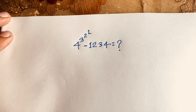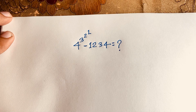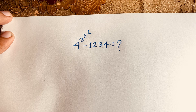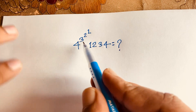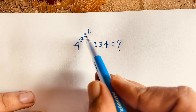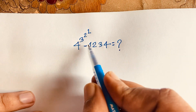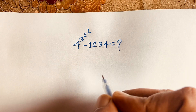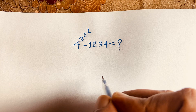Hello everyone, welcome to Russia's classroom. Today we are solving this interesting math question without a calculator. Our question is 4 to the power 3 to the power 2 to the power 1, minus 1234. What does this equal?